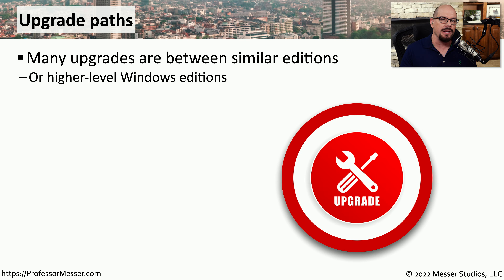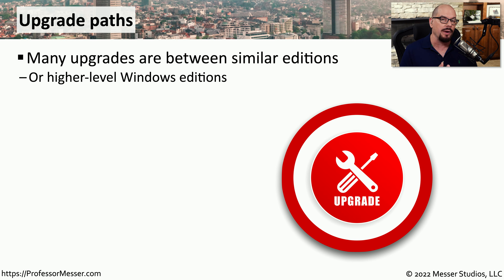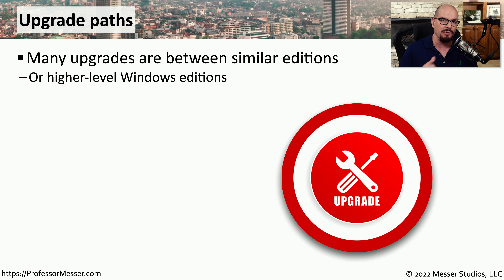Generally speaking, you can upgrade your version of Windows from one edition to the same edition or an edition that's considered a higher-level edition. For example, you can upgrade from Windows 10 Home to Windows 11 Home. But you could also upgrade from Windows 10 Home to Windows 11 Pro, because the Pro version is one that's a higher-level edition than the Home version.